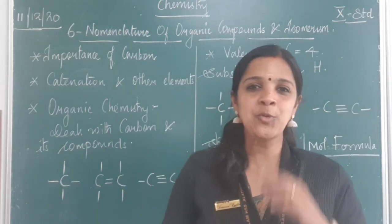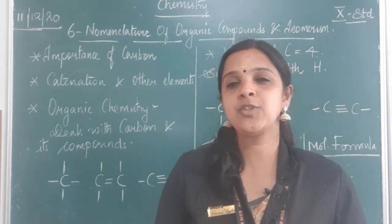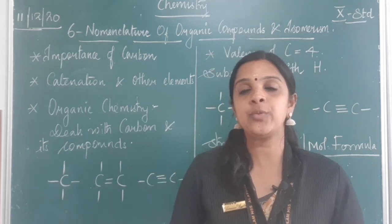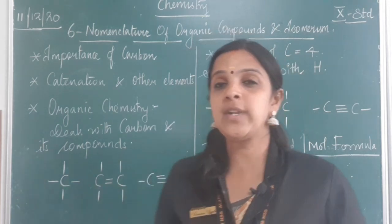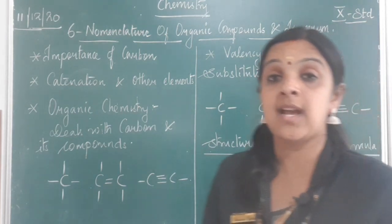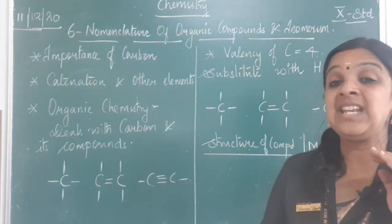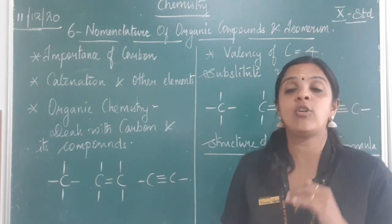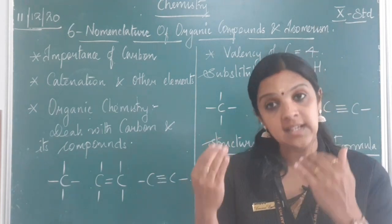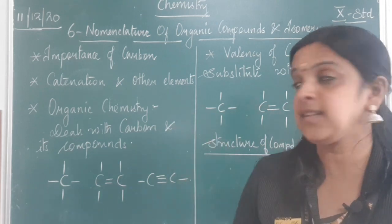There were some children who were asking me about the lab experiments. Definitely, once these chapters are over, I will make sure that I will take room for that, and I will definitely do the experiment and show you in a separate video. So today's class, we are going to begin with a new chapter: Nomenclature of Organic Compounds and Isomerism. Nomenclature means naming — we are going to name an organic compound. Isomerism is a second part which we will be learning at the later classes.